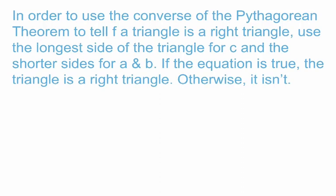If the equation is true, the triangle is a right triangle. Otherwise, it isn't. It is not a right triangle if the two sides are not equal after you square, then add them together.